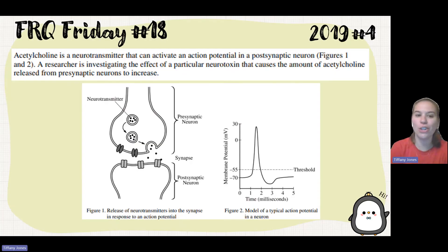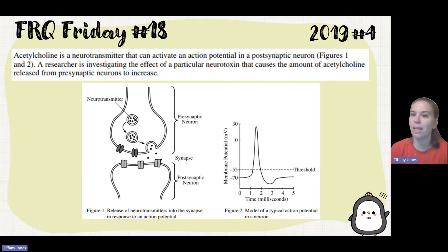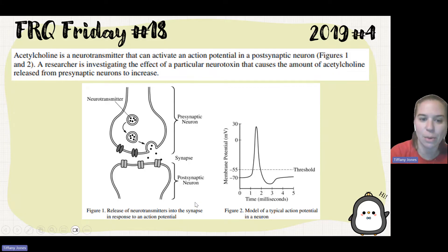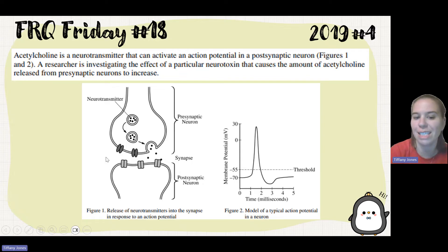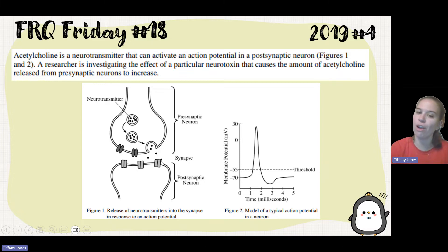Acetylcholine is a neurotransmitter that can activate an action potential in a post-synaptic neuron. A researcher is investigating the effect of a particular neurotoxin that causes the amount of acetylcholine released from the pre-synaptic neurons to increase. We can see the neurotransmitter inside the vesicle going through exocytosis, released into the synapse, where it binds to the post-synaptic neuron causing some type of response.